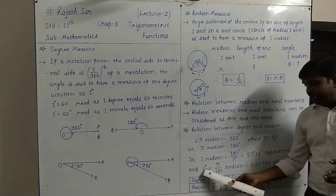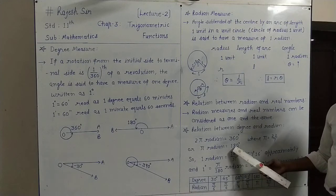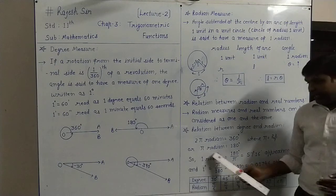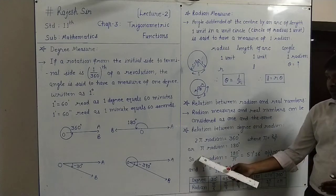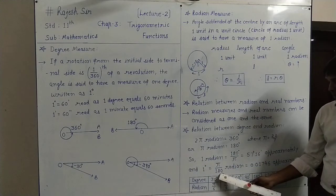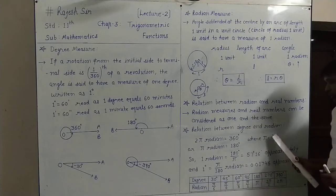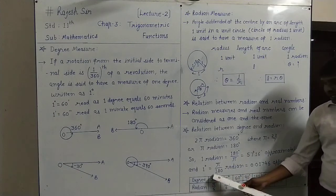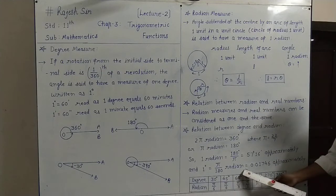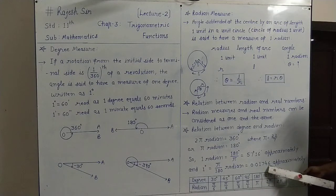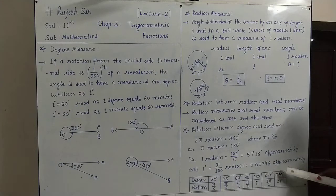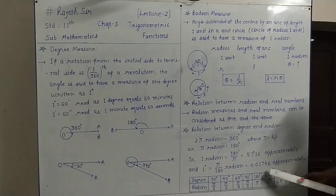Similarly, if we want 1 degree in radians — because 180 degrees equals pi, so 1 degree equals pi upon 180 radians. Again, placing the value of pi as 22 upon 7 and dividing by 180, you get the answer in radians. The numeric value after calculation is approximately 0.01746 radian.